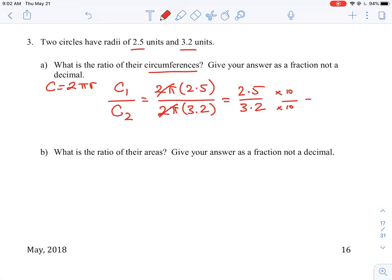In this case we just need to move it over one spot. So if we multiply the top and bottom by 10, we will get a ratio or a fraction of 25 to 32.